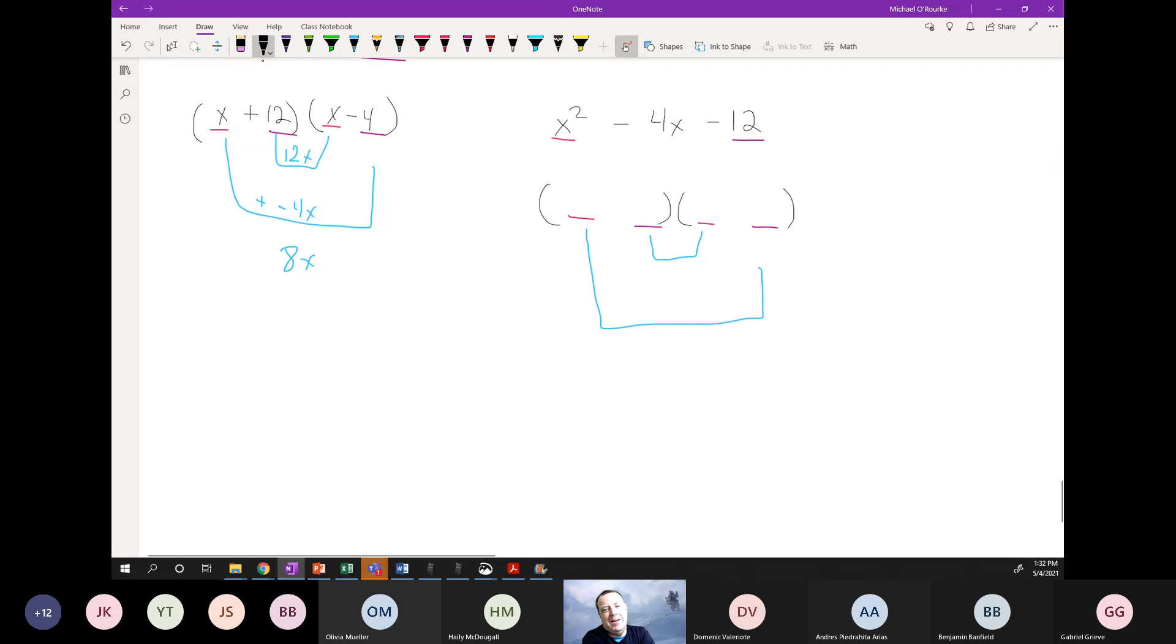All right, does anyone else have it besides Brandon? Dominic says negative 2 and 6. Let's try that. Negative 2 and positive 6. Oh, sorry, I misread that. So 2 times negative 6 is negative 12. X times x is x squared. And if I do my checks, this equals 2x. This is negative 6x. Add those together, I'm going to get negative 4x. Very good.